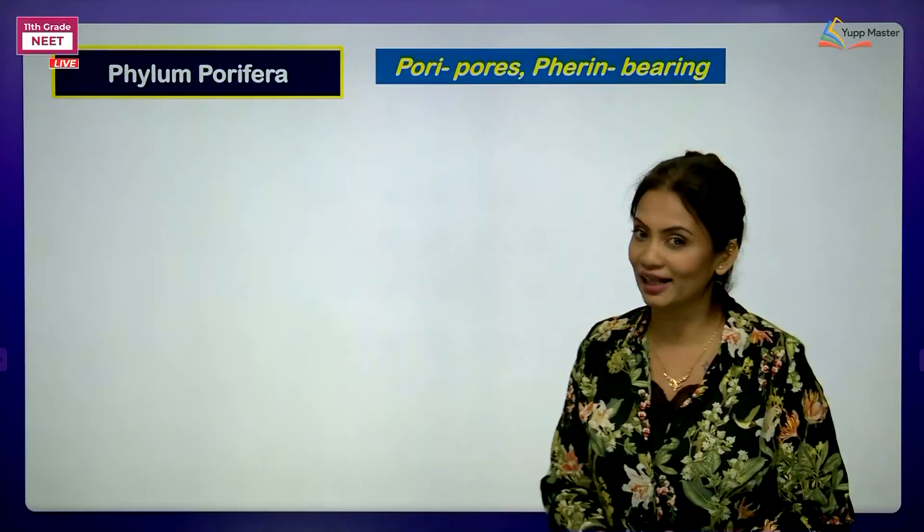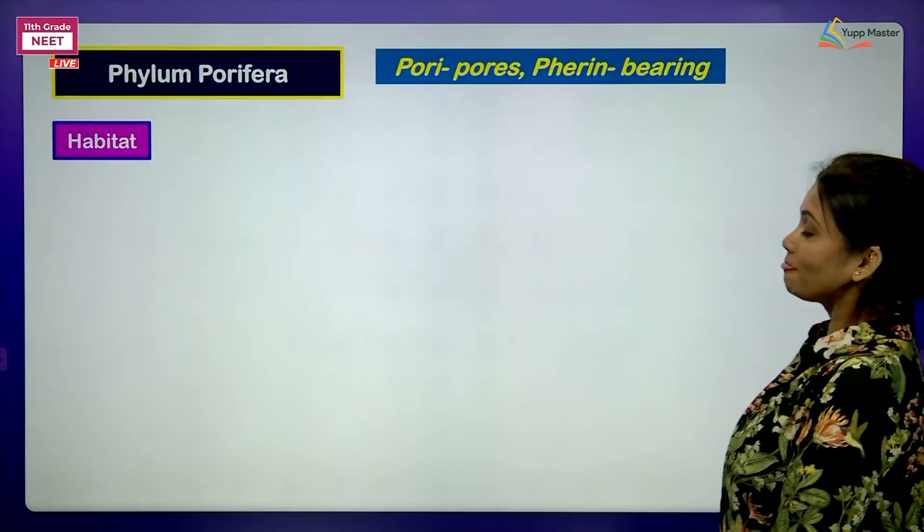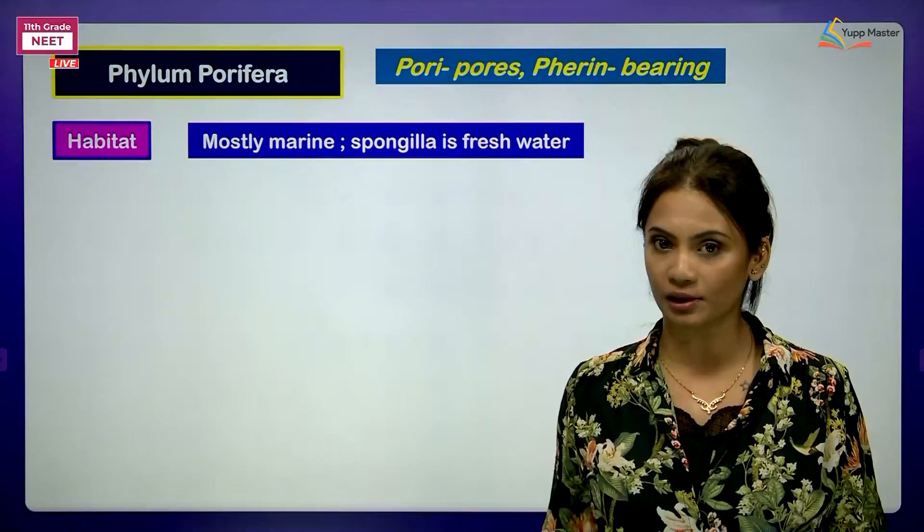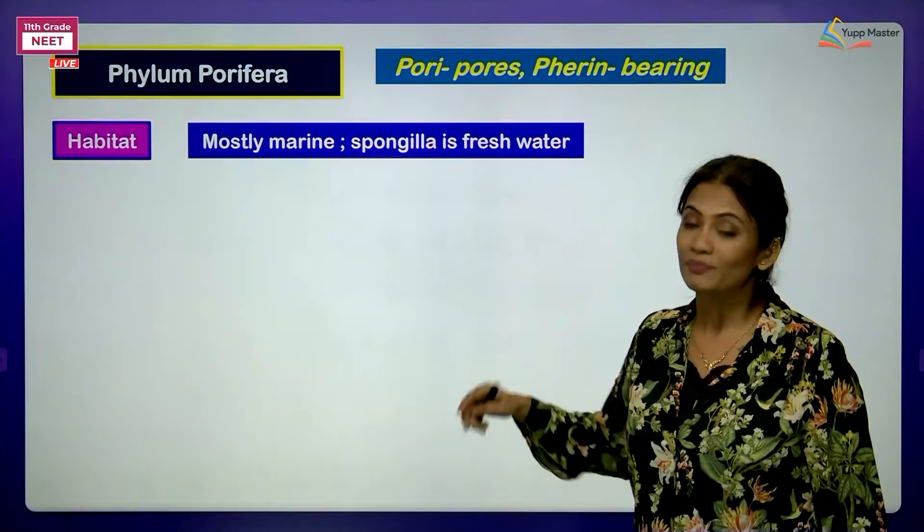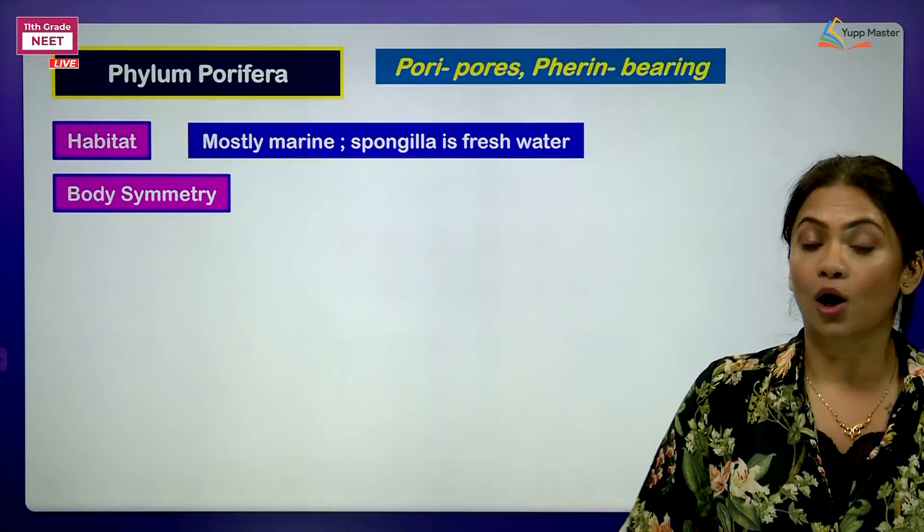Studying it in one big essay won't help. We'll learn it in pointers. First point - Phylum Porifera habitat: these are mostly marine animals, mostly found in marine seawaters. Very few, like one called Spongilla, is a freshwater sponge. When we come to body symmetry - do you remember the types? There was asymmetrical, bilateral, and radial. In this phylum, they are mostly asymmetrical animals, with very few being radially symmetrical.